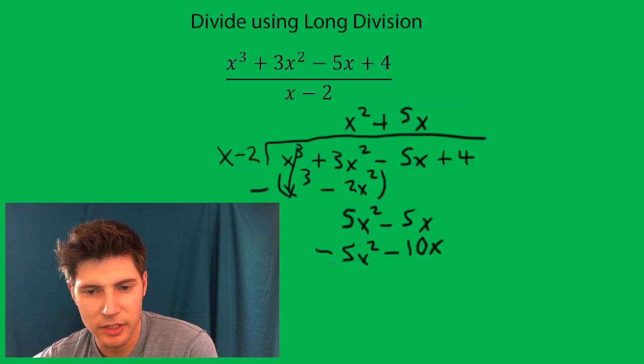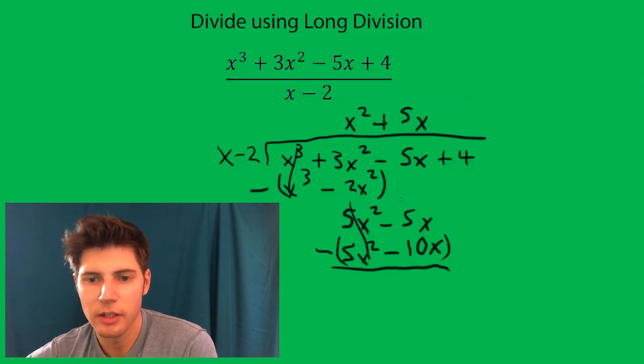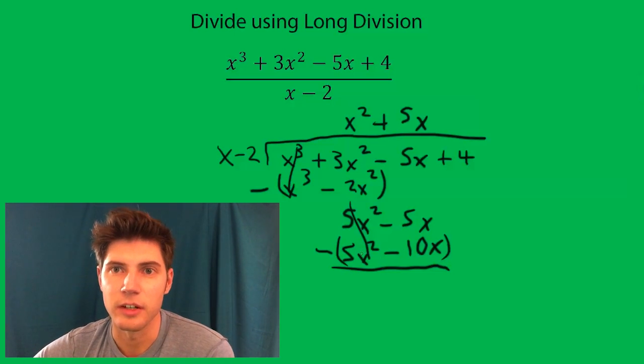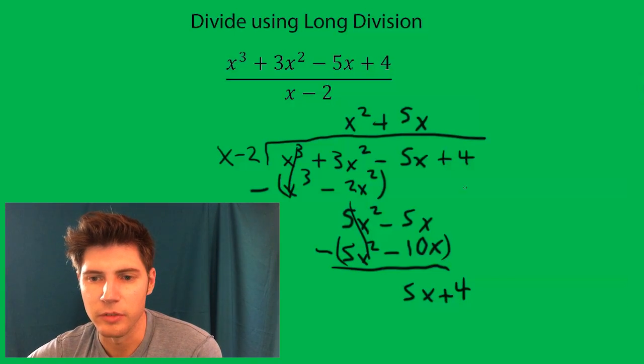We're going to subtract again all of it. This goes away and then it's negative 5 minus negative 10 which is negative 5 plus 10. So we're left with 5x plus 4 after we bring 4 down.